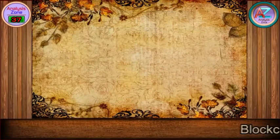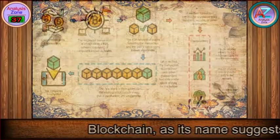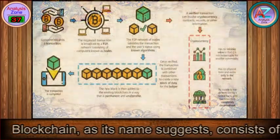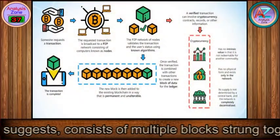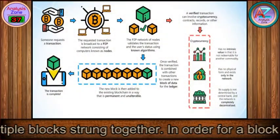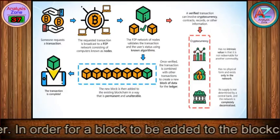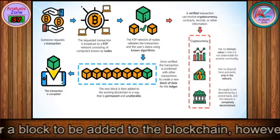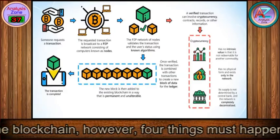Blockchain, as its name suggests, consists of multiple blocks strung together. In order for a block to be added to the blockchain, however, four things must happen.